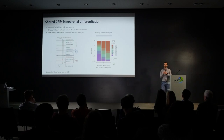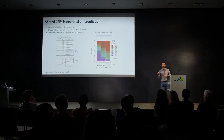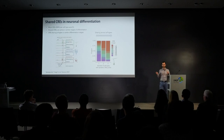We can also ask whether the degree of CRE sharing changes during differentiation. We see an enrichment of early CREs in sets shared across two or more cell types — pleiotropic CREs are more active in early differentiation, and the chromatin accessibility profiles of different neuron types gradually diverge during this process. This has profound implications for the evolution of these cis-regulatory elements.